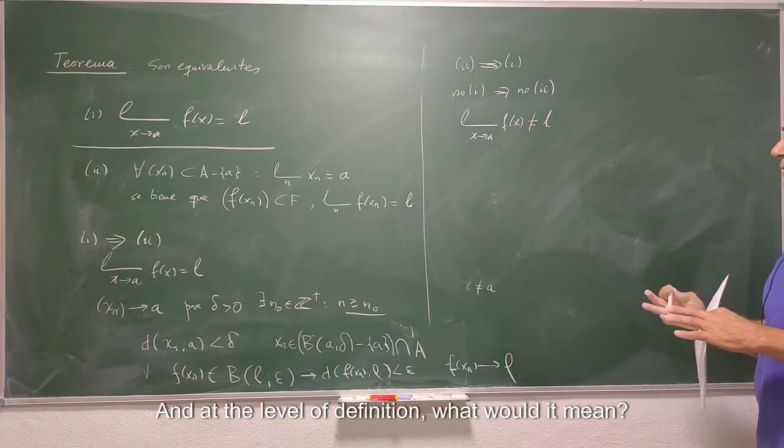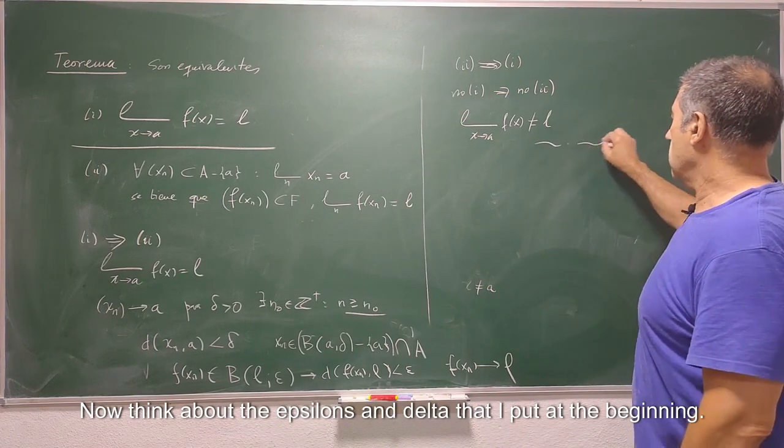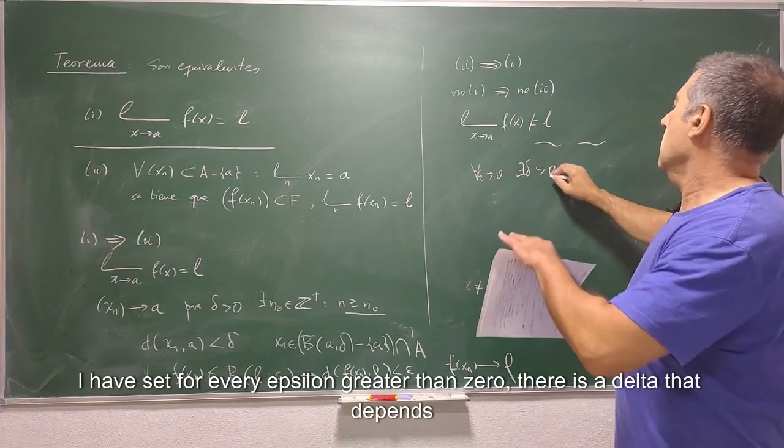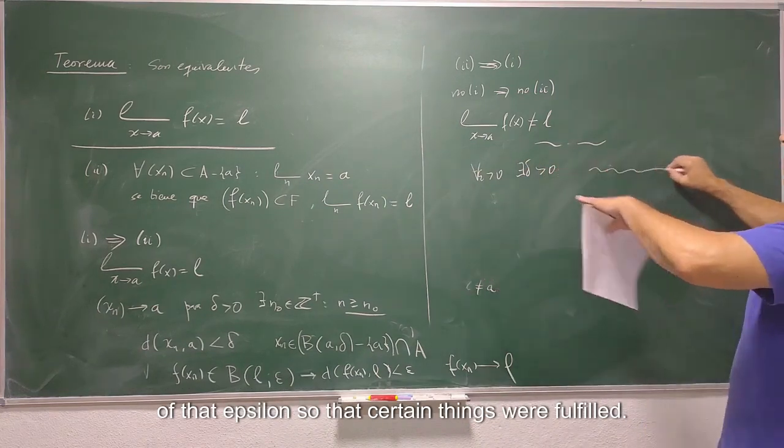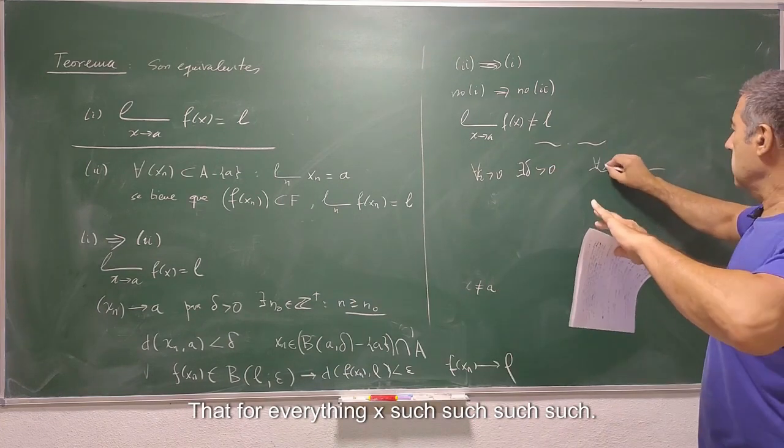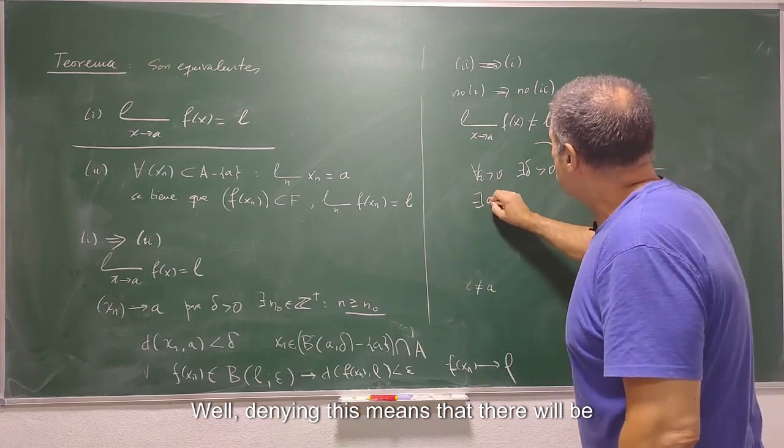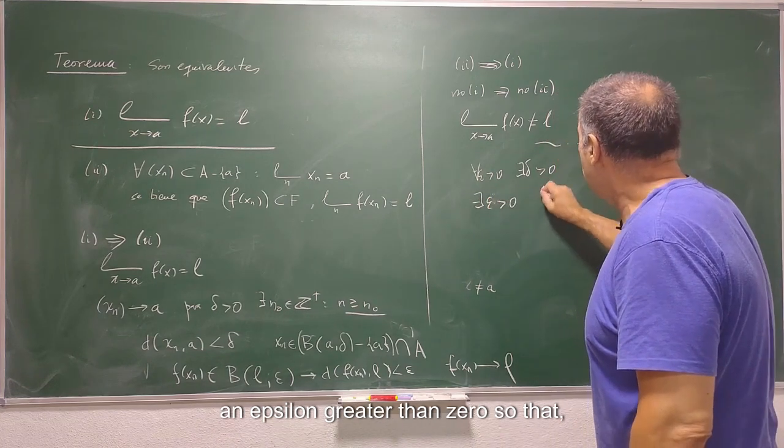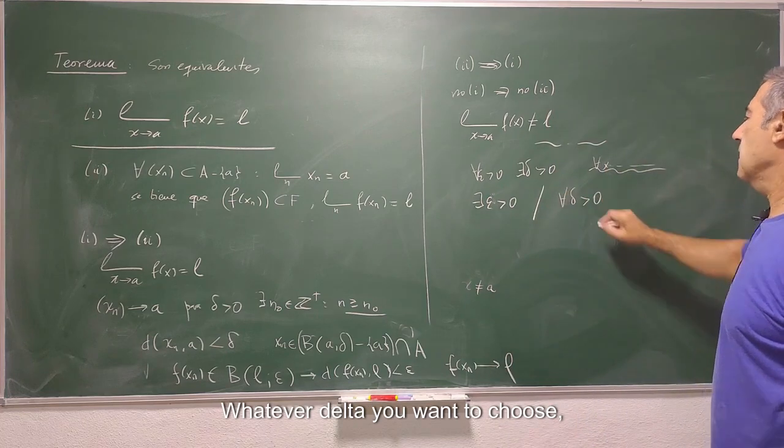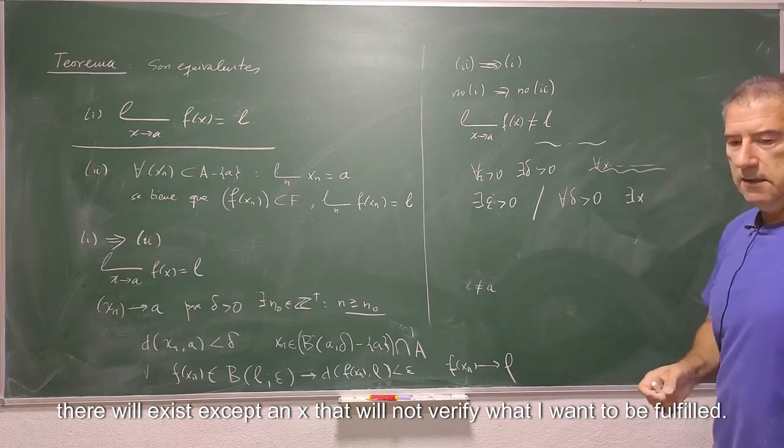And at the level of definition, what would it mean? Now think about the epsilons and delta that I put at the beginning. I have set for every epsilon greater than 0, there is a delta that depends of that epsilon so that certain things were fulfilled. That for every x such such such. Well, denying this means that there will be an epsilon greater than 0 so that whatever delta you want to choose, there will exist an x that will not verify what I want to be fulfilled.